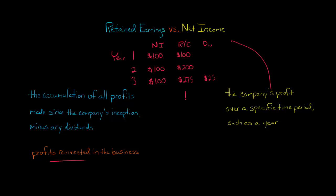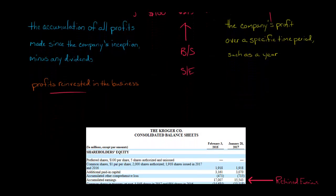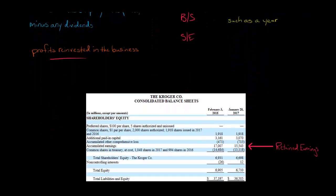The retained earnings account appears on the company's balance sheet in the stockholders' equity section, while net income appears on the company's income statement. Let me show you an example with Kroger.